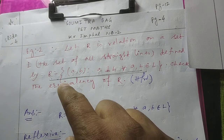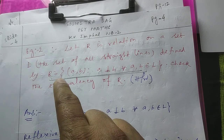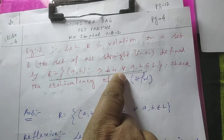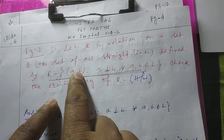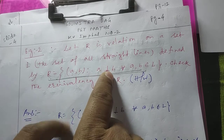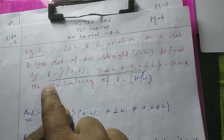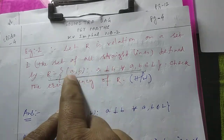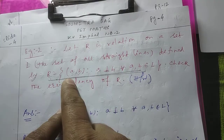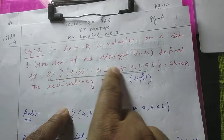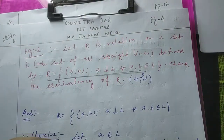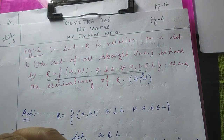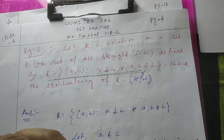First we have to understand how R is defined. R = {(a, b) such that a is perpendicular to b}. R is the set of all ordered pairs of the form (a, b) where a is perpendicular to b. If a is perpendicular to b, then (a, b) belongs to R. If a is not perpendicular to b, then (a, b) does not belong to R. This line is very important to understand — if you understand this, the problem is 50% done. Now let us check whether R is reflexive, symmetric, and transitive.